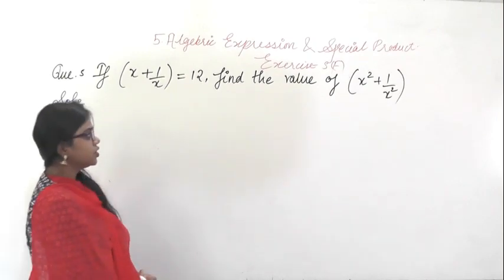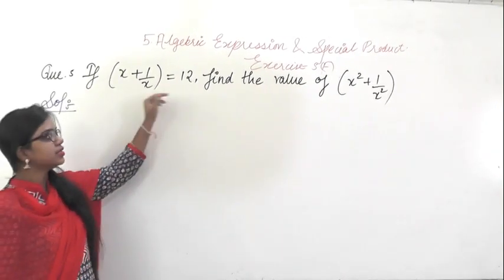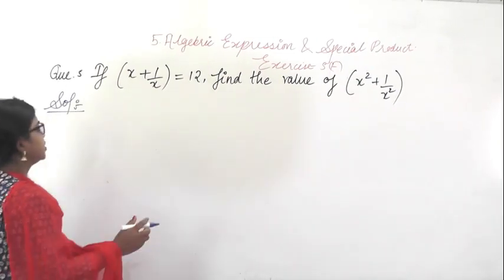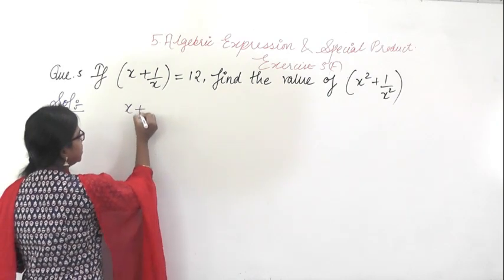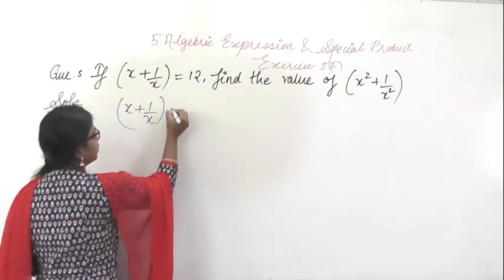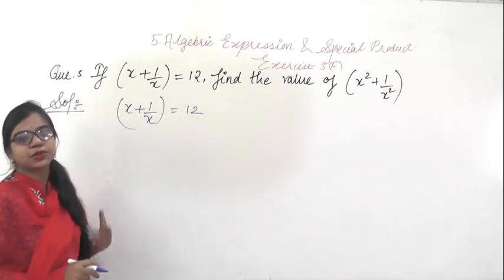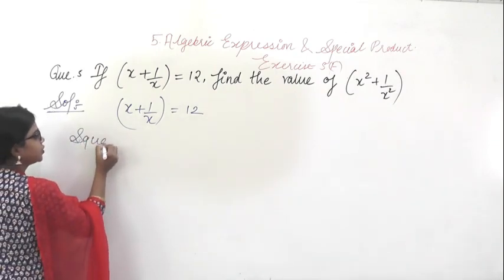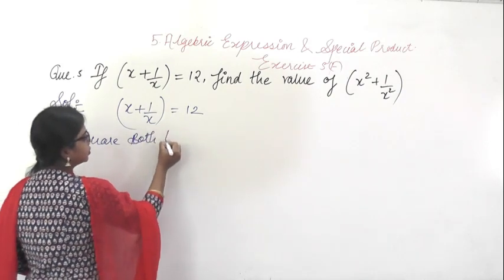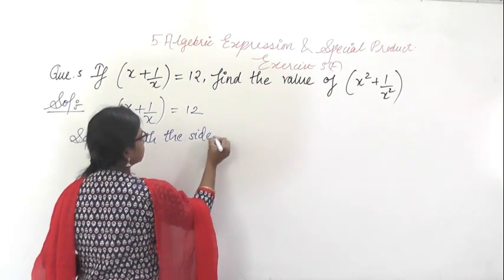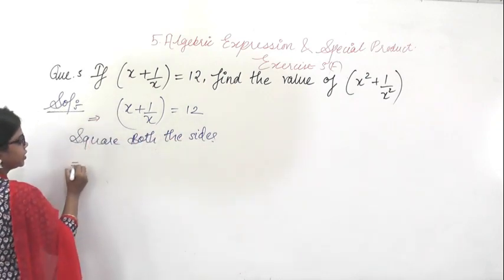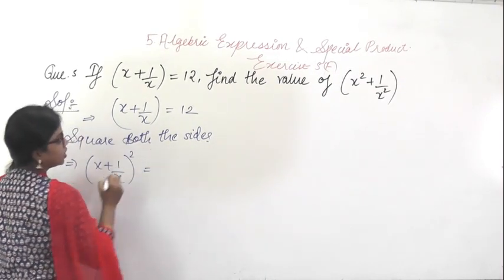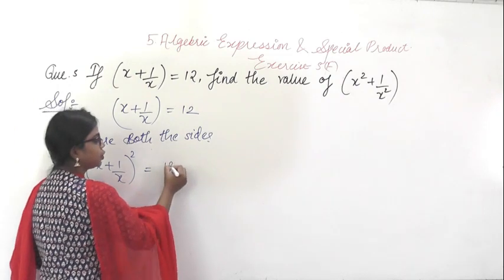This is question number 5. In this question it is given: if x + 1/x = 12, find the value of x² + 1/x². So for this, square both sides. You will get (x + 1/x)² = 12².